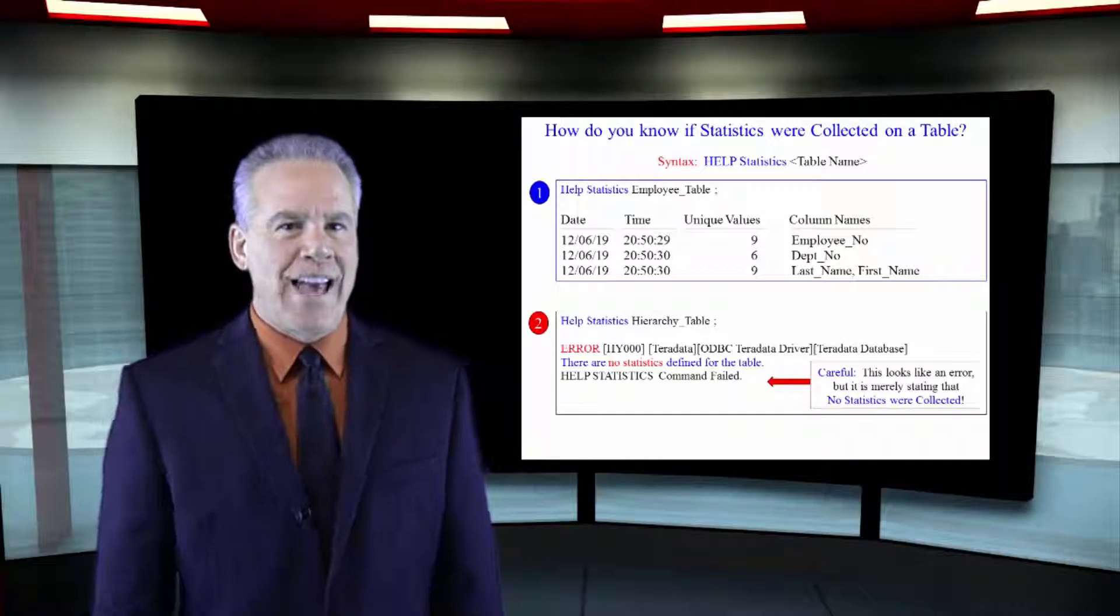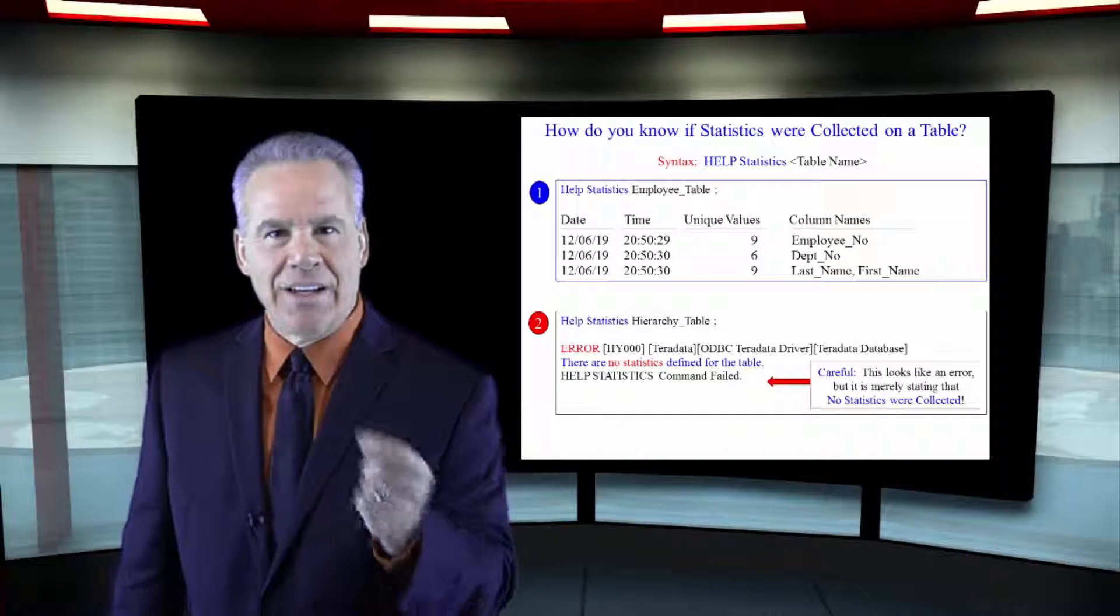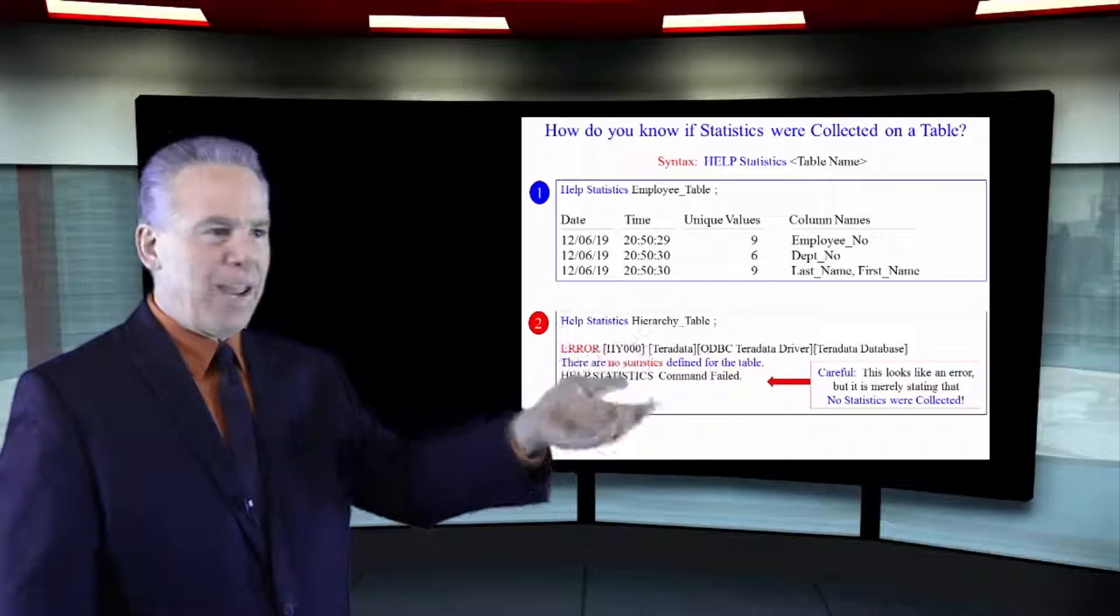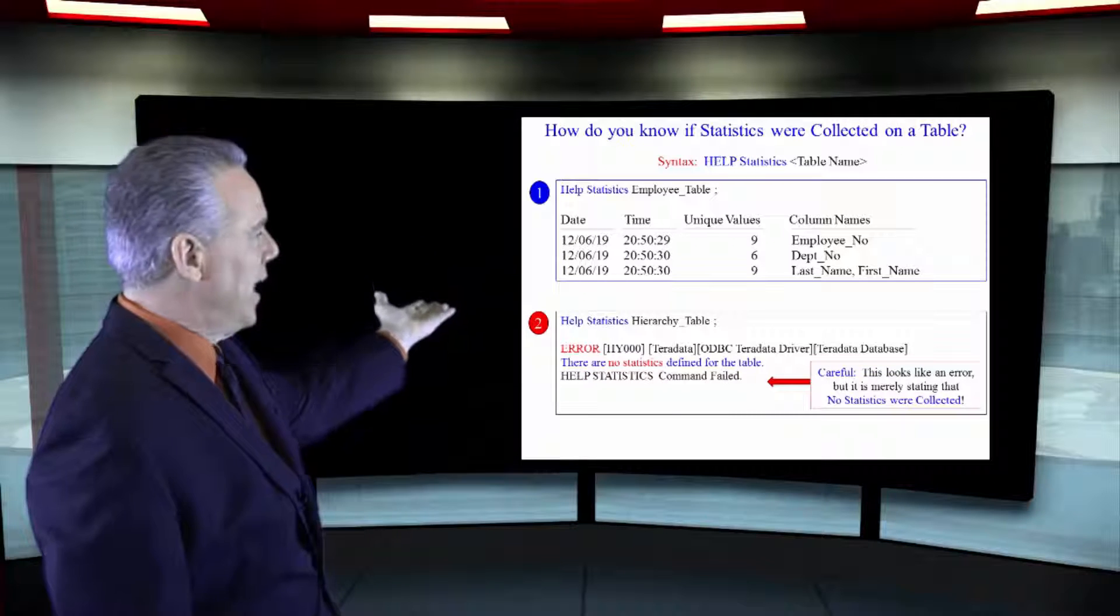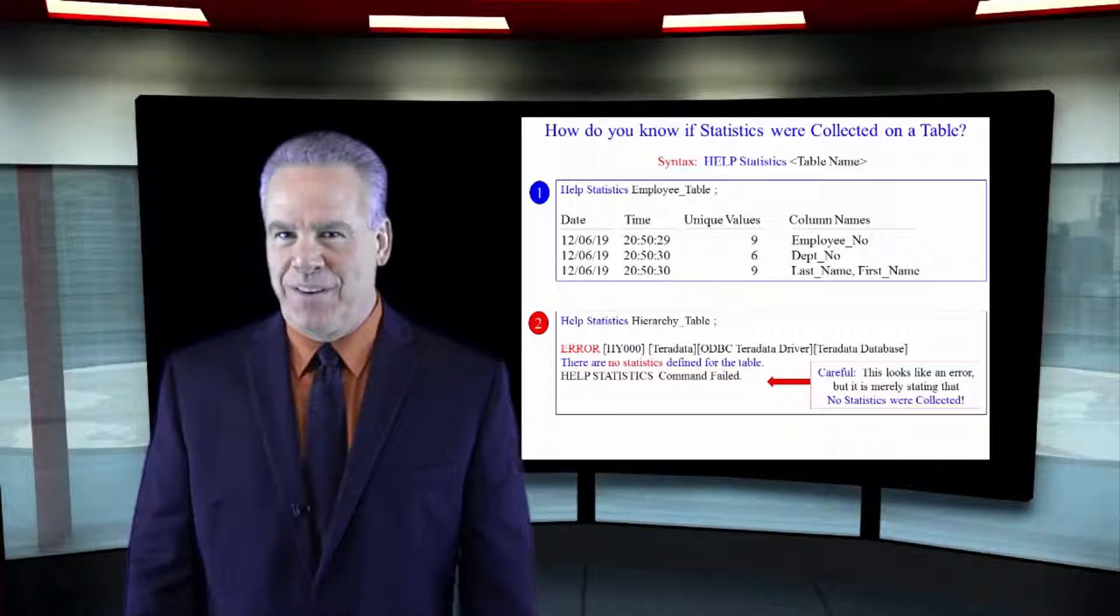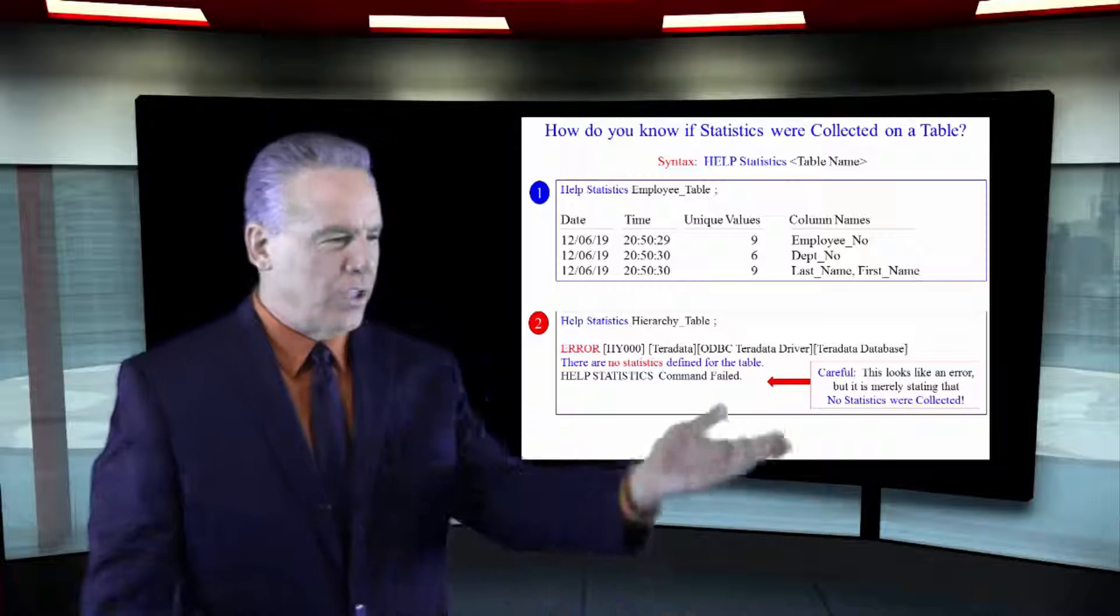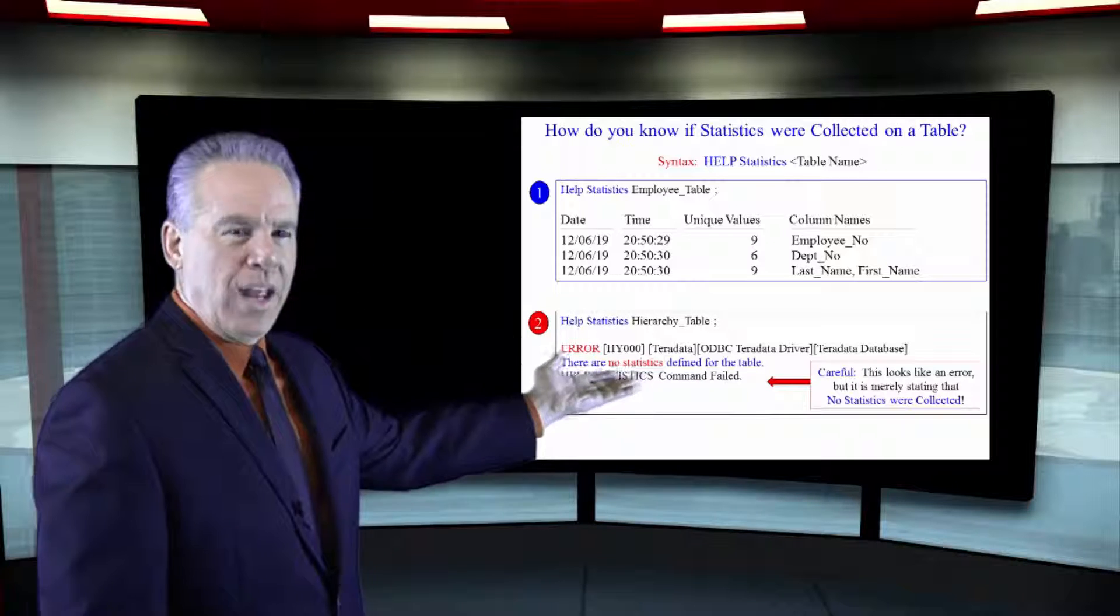If you want to find out if statistics were collected on a table, just say HELP STATISTICS and then the table name. And as you can see here, we collected on three different things. Sometimes this is really interesting. You'll say HELP STATISTICS and give it the table name.